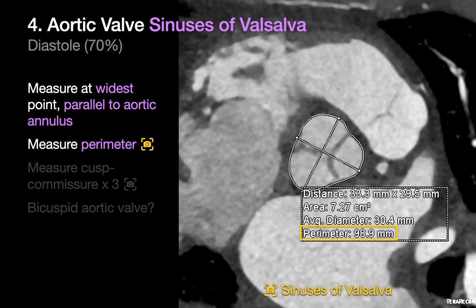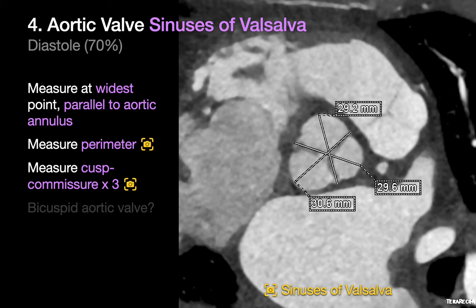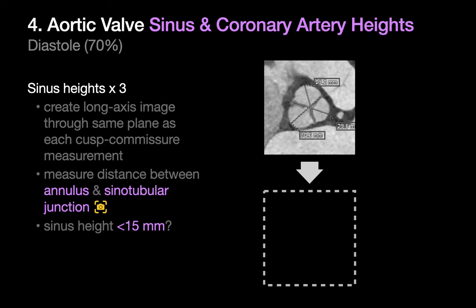Sinuses of Valsalva that measure under 28 millimeters are associated with a higher risk of coronary artery occlusion after TAVR. You'll measure the sinuses of Valsalva at their widest point and parallel to the aortic annular plane — measure and report the perimeter and do an image capture. Then measure and report three cusp-to-commissure distances and do another image capture. This will also be your best opportunity to recognize and report if the aortic valve is bicuspid. Bicuspid aortic valves are associated with poorer outcomes post-TAVR and carry a higher likelihood of paravalvular leak because their annuluses may be unusually shaped.